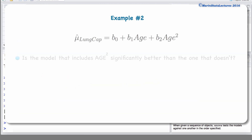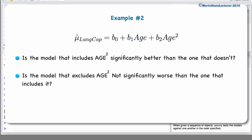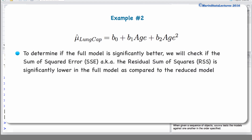We would like to know if the model that includes age squared is significantly better than the one that does not, or conversely, whether the model that excludes age squared is not significantly worse than one that includes it. The way we will define if the full model is significantly better is by determining if the sum of squared error, or the residual sum of squares, is significantly lower in the full model compared to the reduced model.